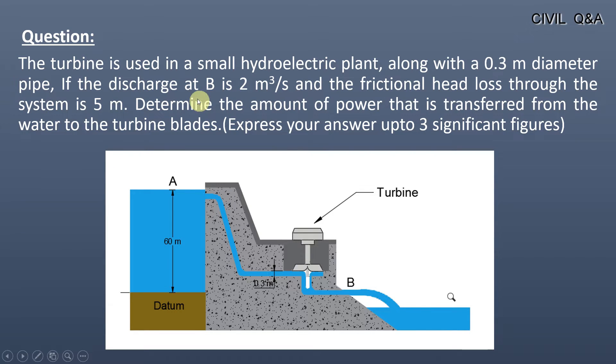If the discharge at B is 2 meter cube per second and the frictional head loss through the system is 5 meters, determine the amount of power that is transferred from the water to the turbine blades. Express your answer up to three significant figures.